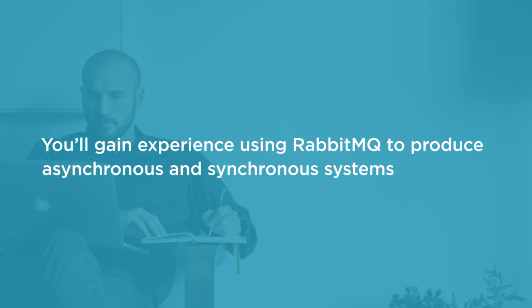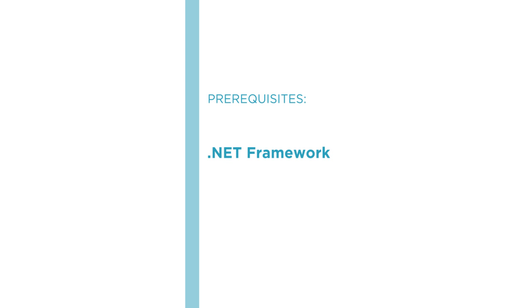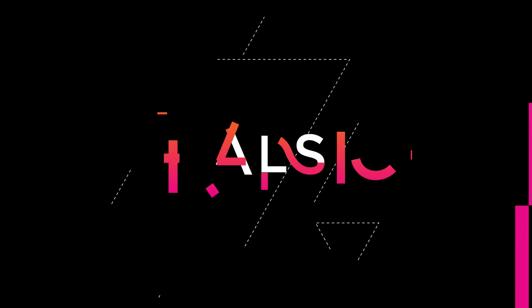This course is ideal for software developers who work on large and small enterprise systems that require the use of message queuing to offer reliability, scalability and high availability. The examples in this course are based around the .NET Framework and C-Sharp and are built using Visual Studio 2015 Community Edition. I hope you'll join me on this journey to learn RabbitMQ with the RabbitMQ by Example course here at Pluralsight.